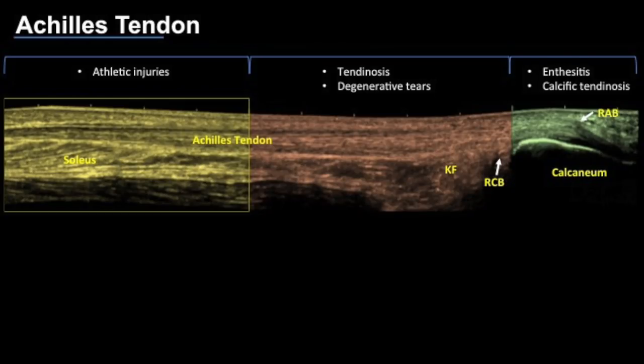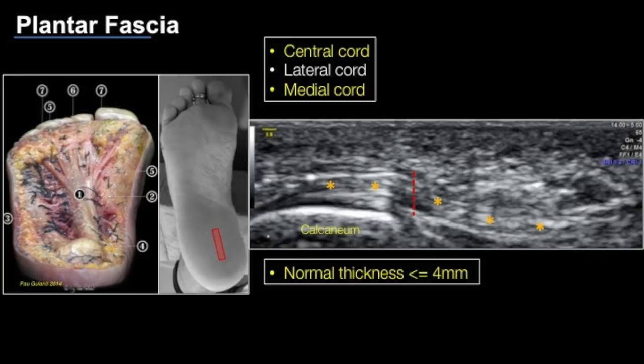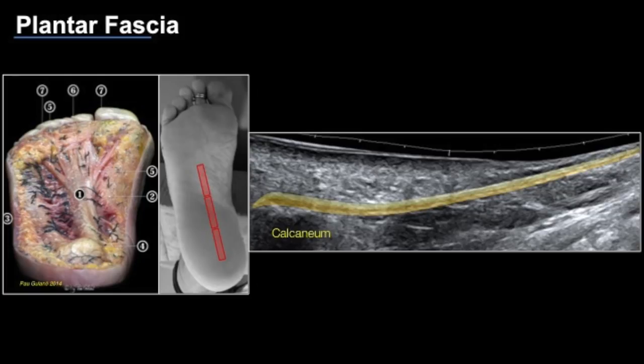Moving on to the plantar fascia — it is not just a broad fascia but typically has three cords: the central cord, which is the main component, the lateral cord, and the medial cord. The medial cord is not clinically very relevant; most plantar fasciitis involves the central cord. On long axis, the plantar fascia appears as a fibrillary structure attaching over the smooth cortex of the calcaneum. We measure its thickness just as it exits the posteromedial tubercle; any thickness more than four millimeters in the presence of appropriate symptoms is considered significant.